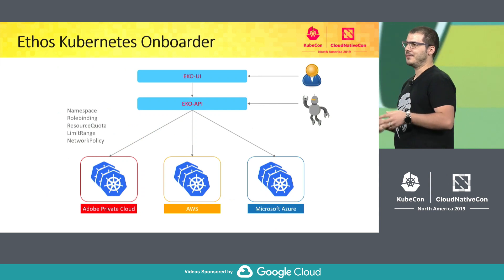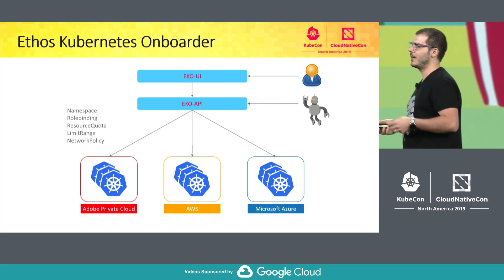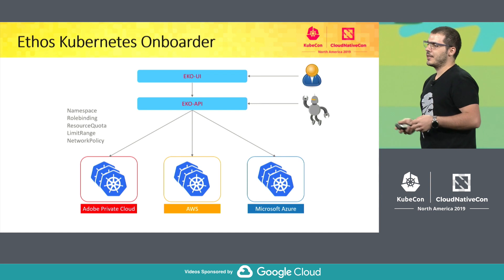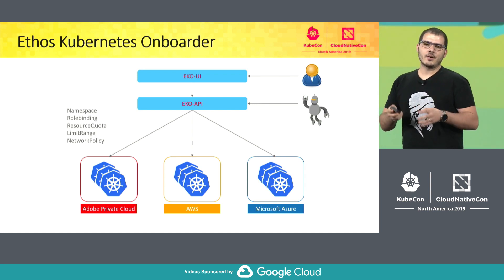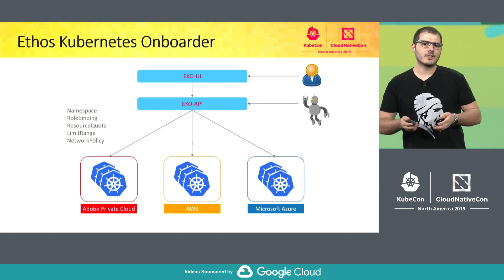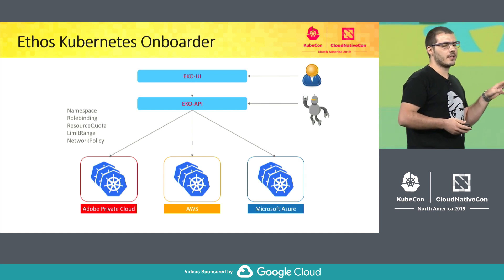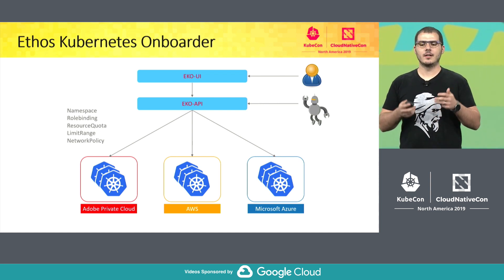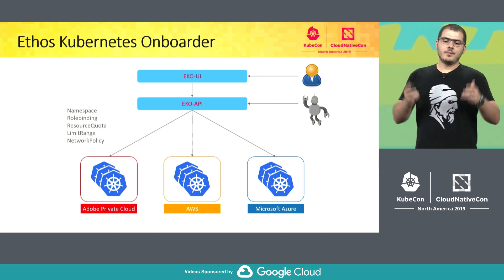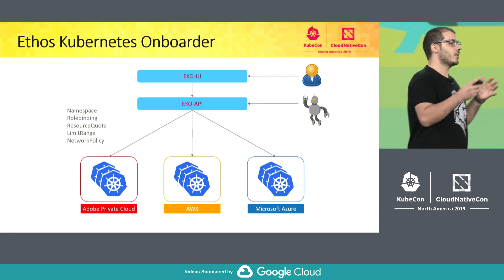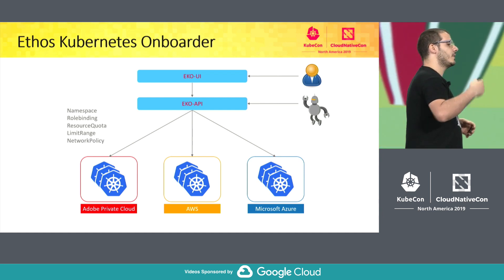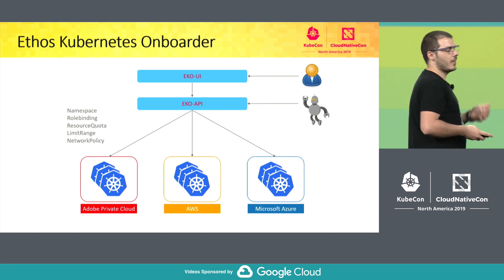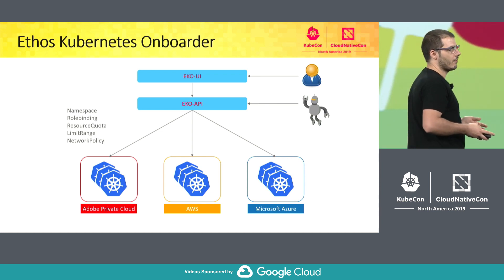For self-service, we internally developed Ethos Kubernetes Onboarder, which is a tiny application that implements Adobe's requirements for tenant onboarding. It creates necessary resources like namespaces, role bindings, resource quotas, limit ranges, and network policies in each cluster selected from a list of clusters running worldwide in Azure, AWS, or Adobe Private Cloud.